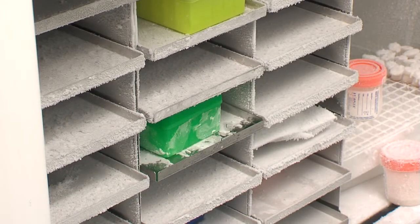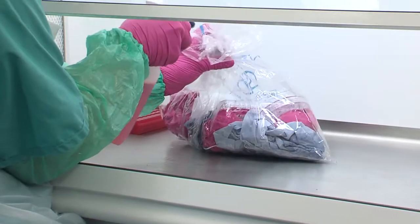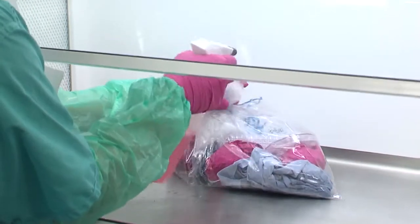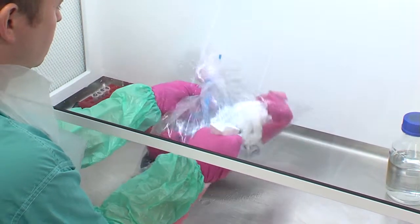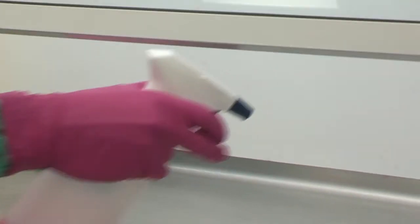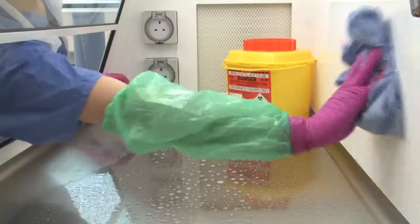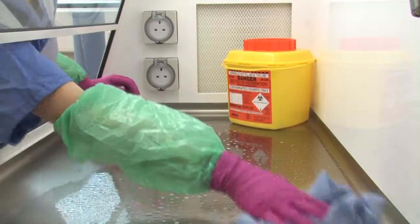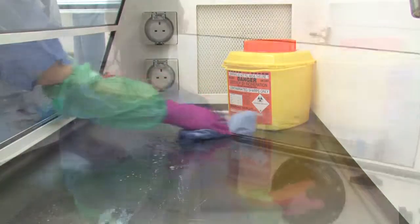Having removed the samples, you'll need to clean and decontaminate the cabinet. Waste that can be autoclaved should be surface decontaminated and removed from the cabinet and discarded into the appropriate waste streams. All cabinet surfaces should be thoroughly cleaned to remove any residual organic matter. The cabinet can then be prepared for bio decontamination. The appropriate method should be determined by risk assessment.